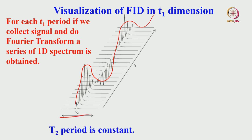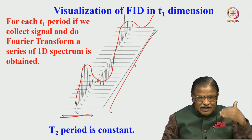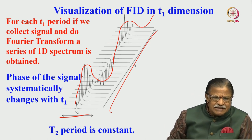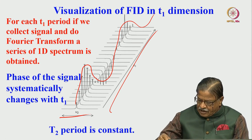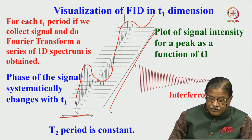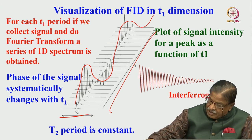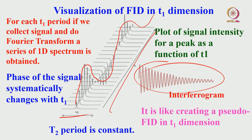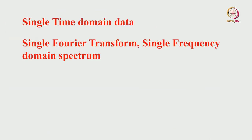We create a pseudo-FID — artificially created, similar to the FID collected in the T2 domain. So in the 1D NMR experiment, there is one time domain, a single Fourier transformation, and a single frequency spectrum — that is one-dimension NMR. In the 2D case, we have two time domains, and we must do Fourier transformation for both time domains to get the frequency domain spectrum.